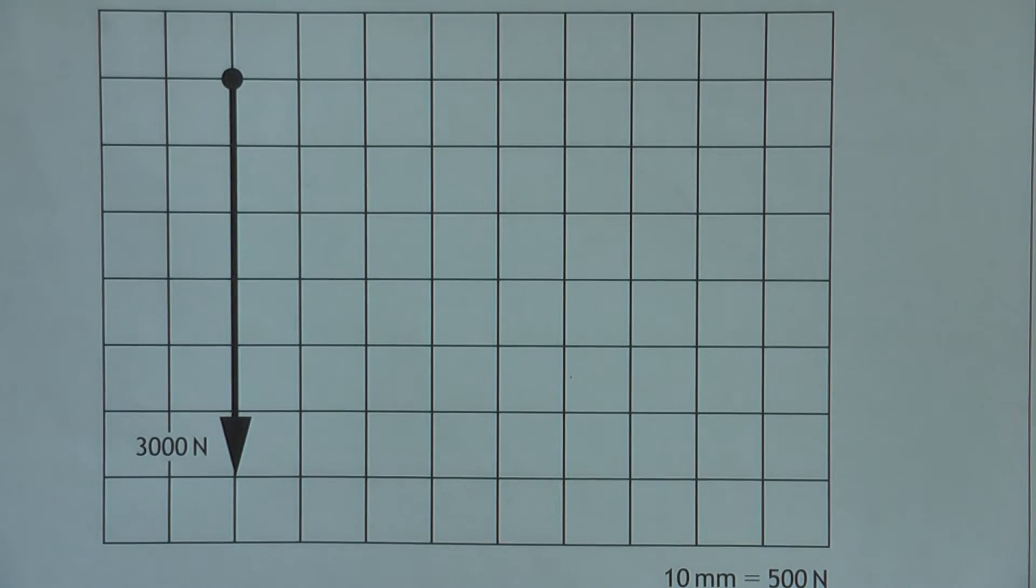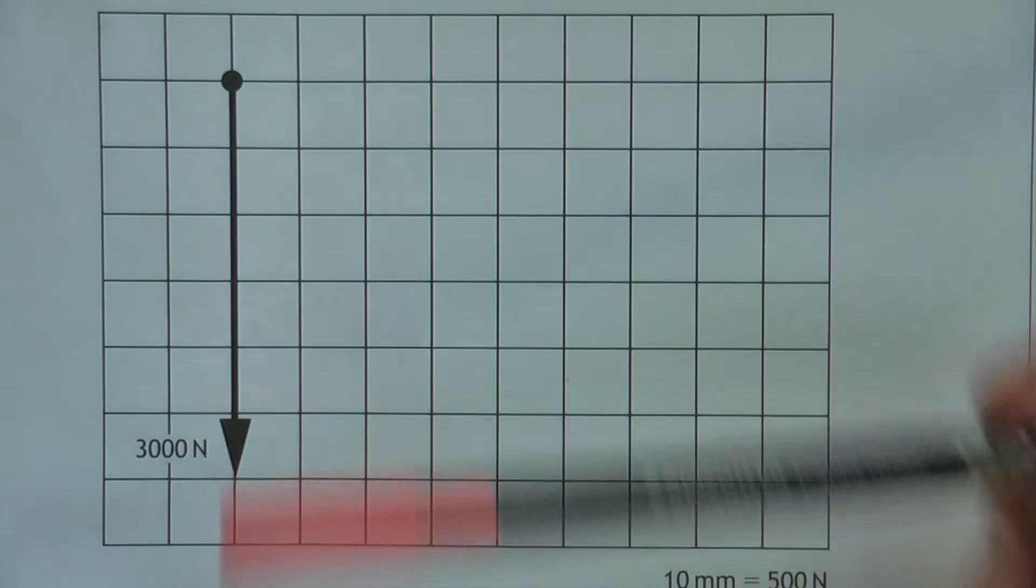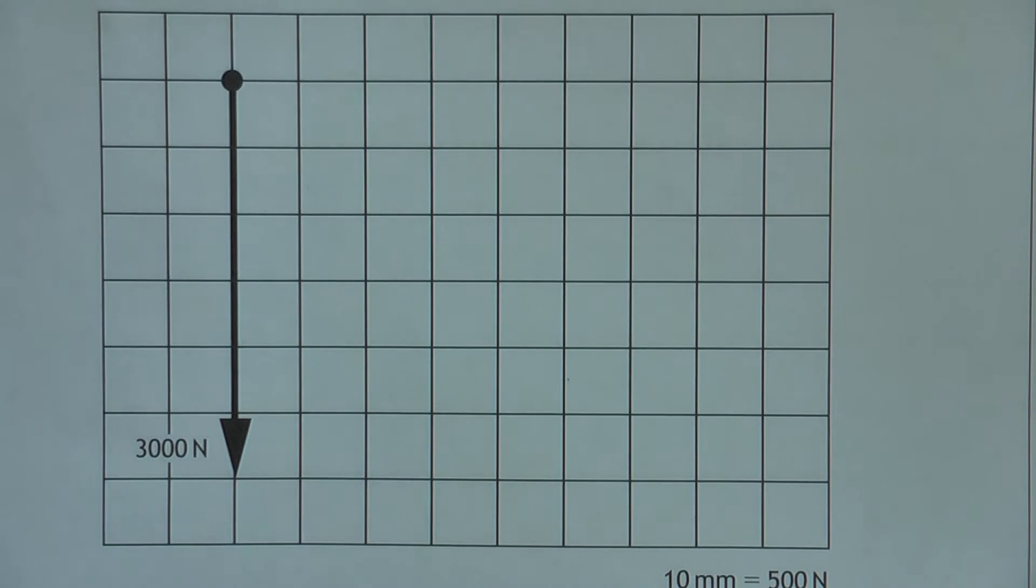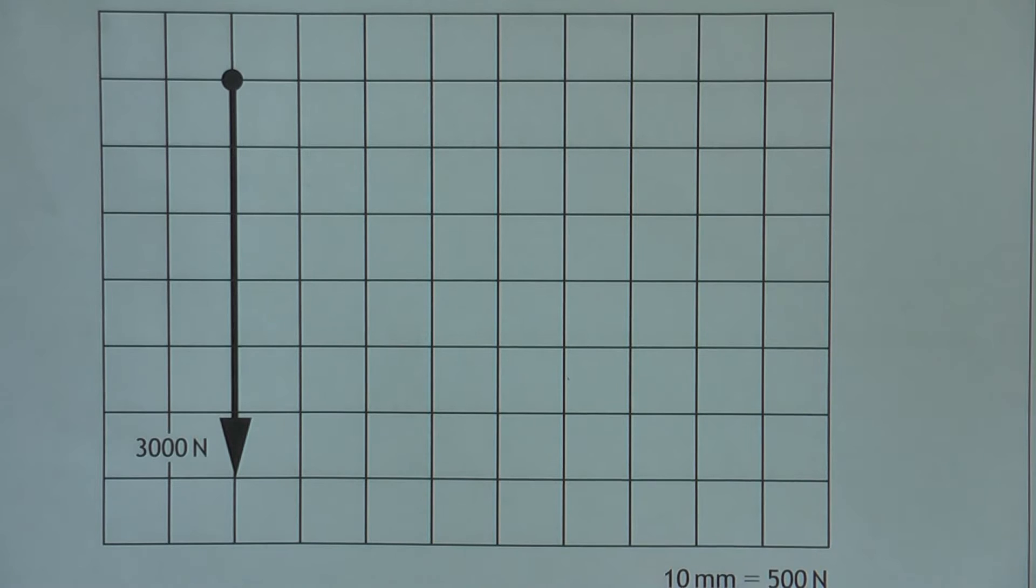In this question, the 3,000 newtons that was going down has already been drawn on the diagram. The diagram's to a scale, 10 millimetres equals 500 newtons. Each of these boxes is 10 millimetres.